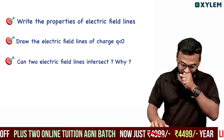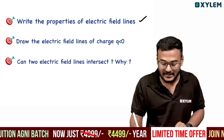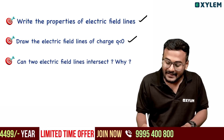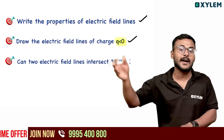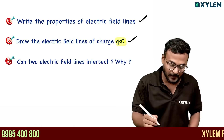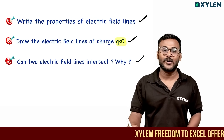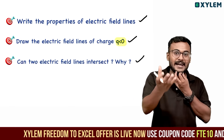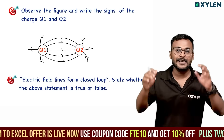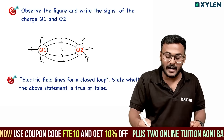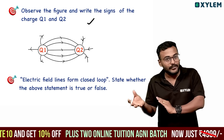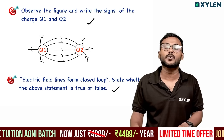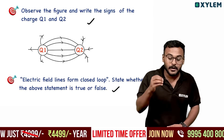If you have a direct hit, consider the properties. If you have Q less than 0, that relates to the electric field lines. If you have Q greater than 0, that is also the electric field lines. If you have two electric charges — positive or negative — similarly, electric field lines form a closed loop.